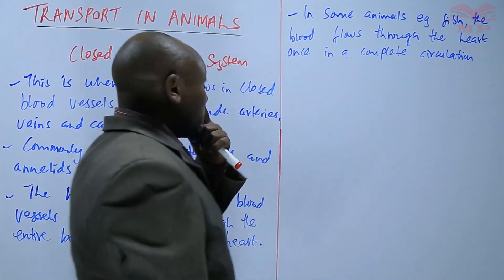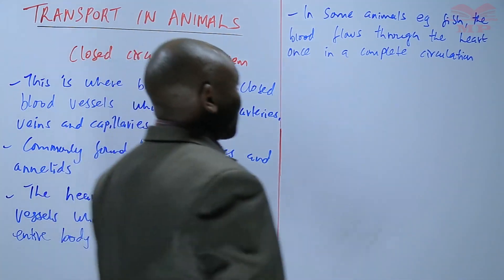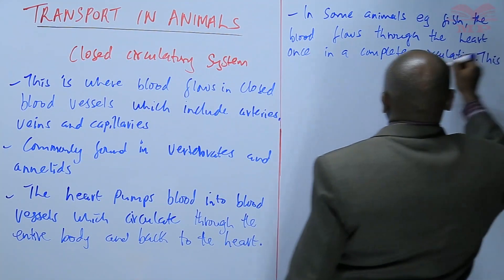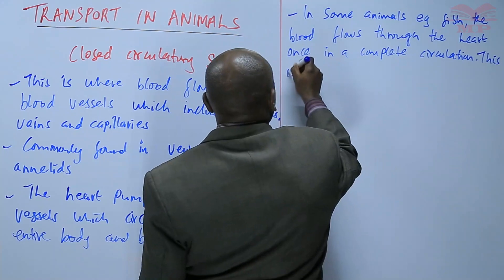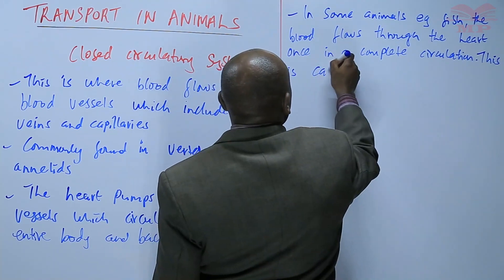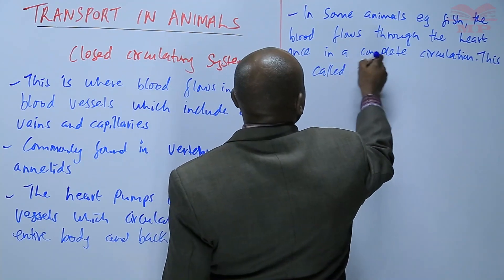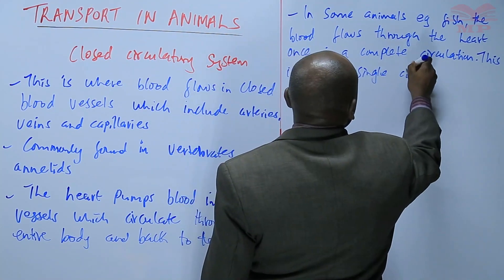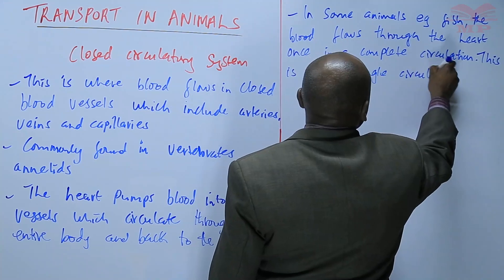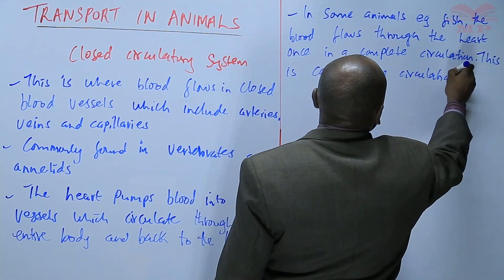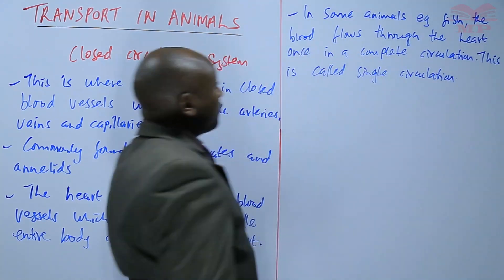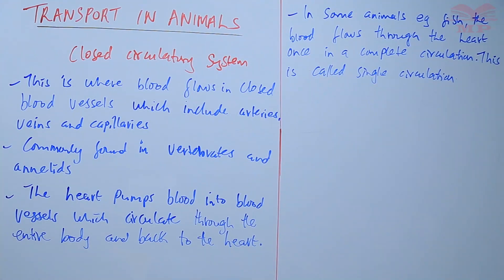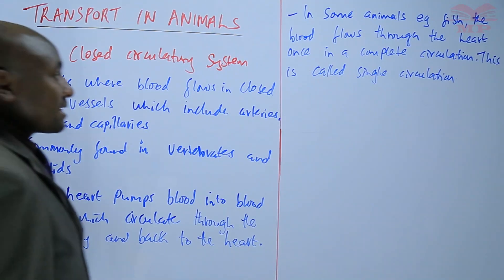When blood goes through the heart once in a complete circulation, this is called single circulation — the blood flows through the heart once in a complete cycle.